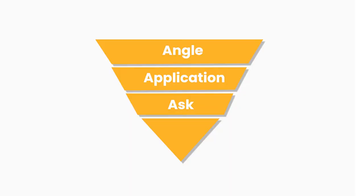And then the final A is advocacy. So once you have your angle, your application, and the ask, how can you then start creating advocates from your customer success? Those advocates you can start using to pump back into creating new angles and new ideas for your company, new applications, and social proof — which you can then use to create what the legacy AIDA model called awareness. So it's much more specific about what the objective should be at each level rather than just creating general awareness.